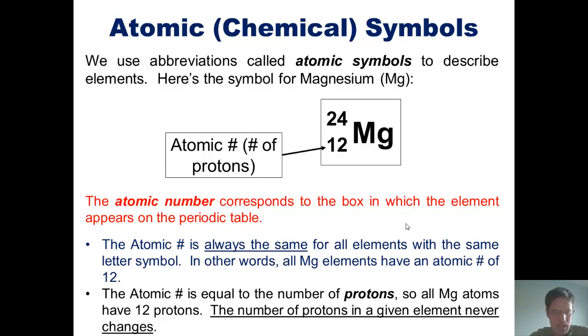For example, if I increased a magnesium atom's number of protons to 13, it would actually change the identity of that element to be that of element number 13, which is aluminum.